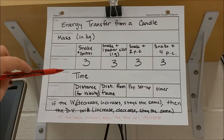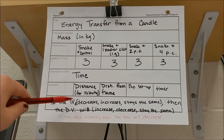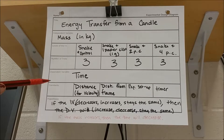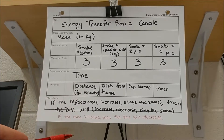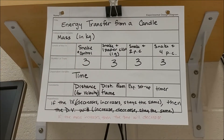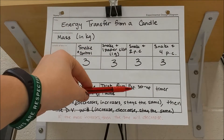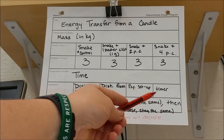The dependent variable is time — I'll time how long it takes for the snake to move, and from that I can figure out velocity. The snake always moves the same distance since it's spinning, so distance is a constant. Constants are things that stay the same in every experiment and don't change from trial to trial. The distance from the flame is also a constant — the closer you hold it, the more energy is transferred — so the setup must stay the same every time.